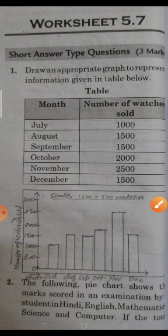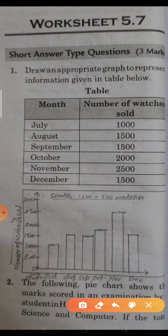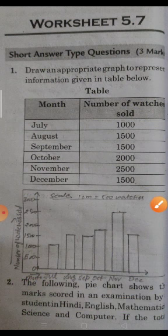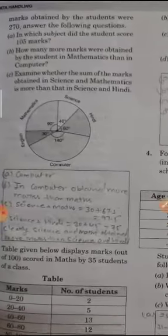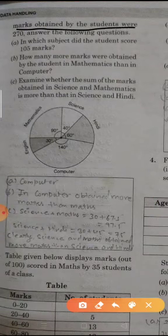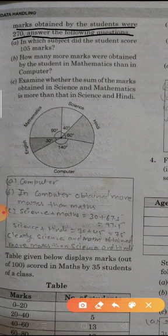Now second question: the following pie chart shows the marks scored in the examination by student in Hindi, English, Mathematics, Science, and Computer. If the total marks obtained by the student were 270, answer the following questions. First, we find the total number of marks by the center angle. So you know the center angle of 360 and given marks is 270.